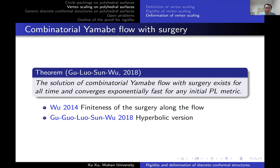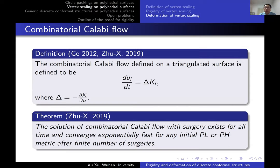The hyperbolic version of Gu-Luo-Sun-Wu's result was obtained by Gu. For the combinatorial Calabi flow for vertex scaling, the Euclidean case was introduced by Ge in his thesis, and the hyperbolic version by Zhu and me. We proved that the solution of the combinatorial Calabi flow with surgery exists for all time and converges exponentially fast for any initial PL or hyperbolic metric after a finite number of surgeries.